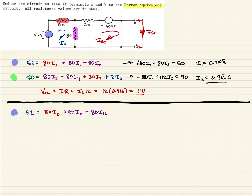Moving to the short circuit loop, we see the 40 volt source, so that's 40 volts equals the drops. The shared 80 ohm resistor gives 80 times ISC, but I0 is working against us on that side, so minus 80 times I0. Continuing around, we have the 20 ohm resistor giving plus 20 times ISC. There are no other resistances in that loop.